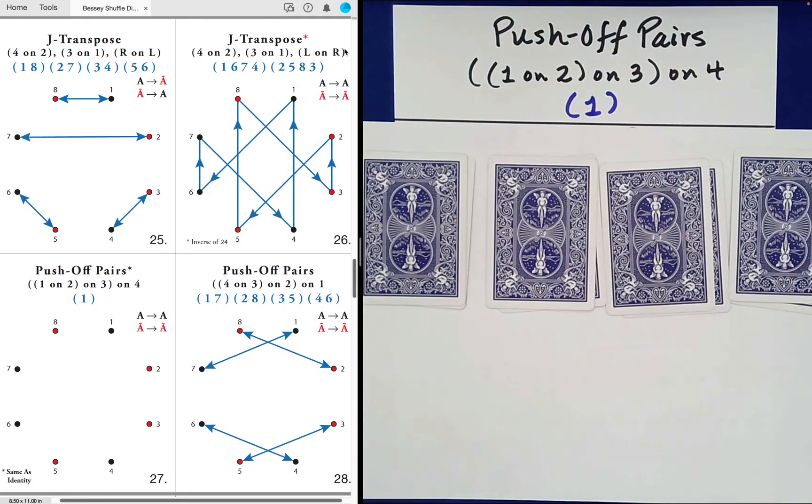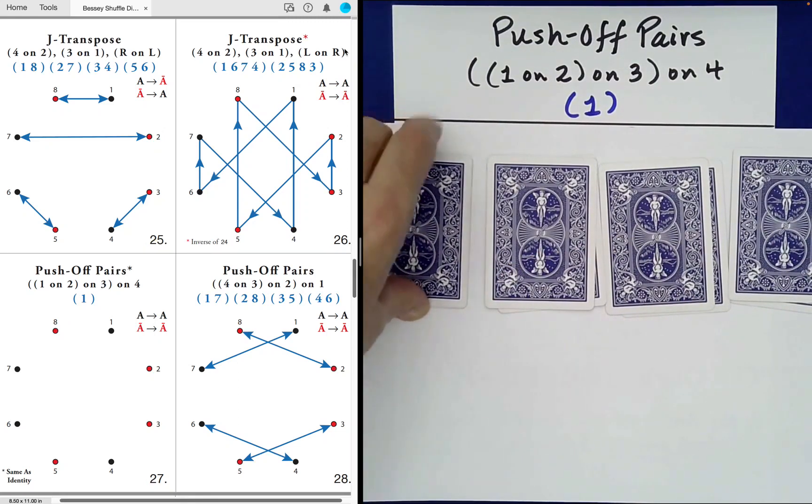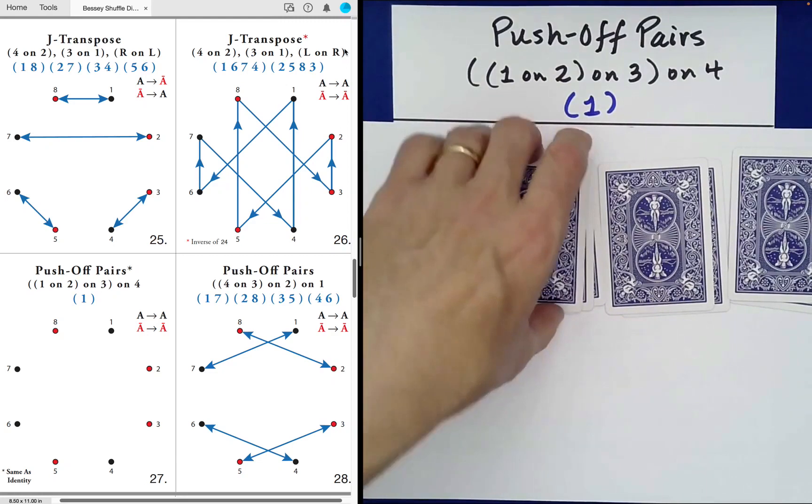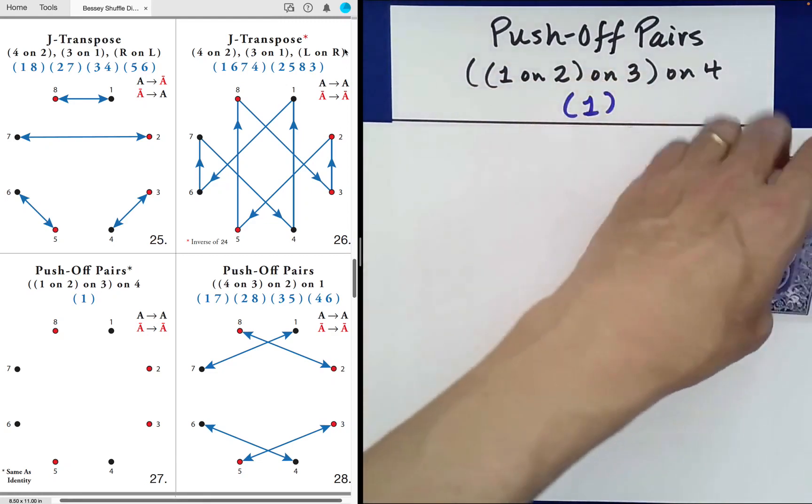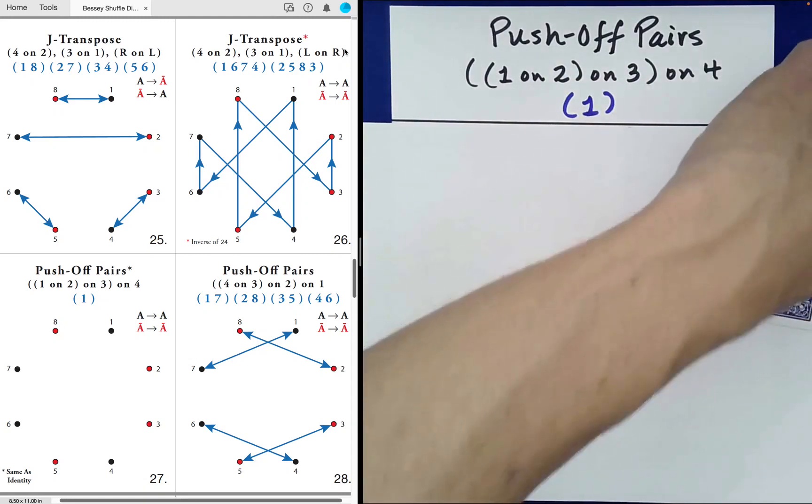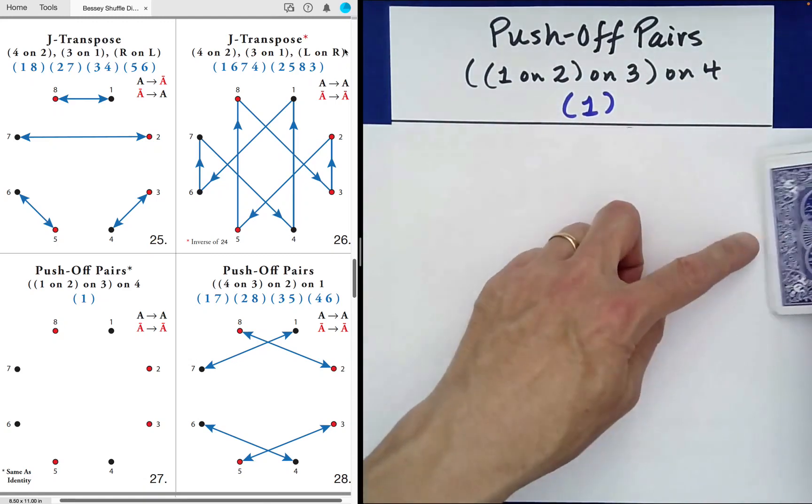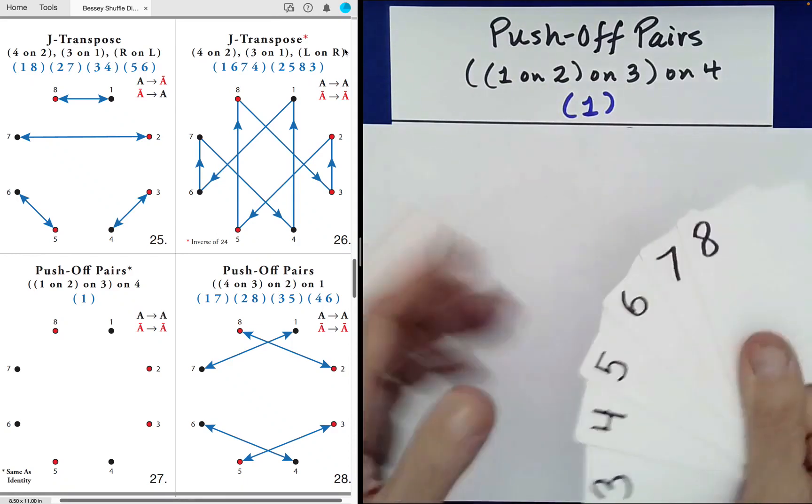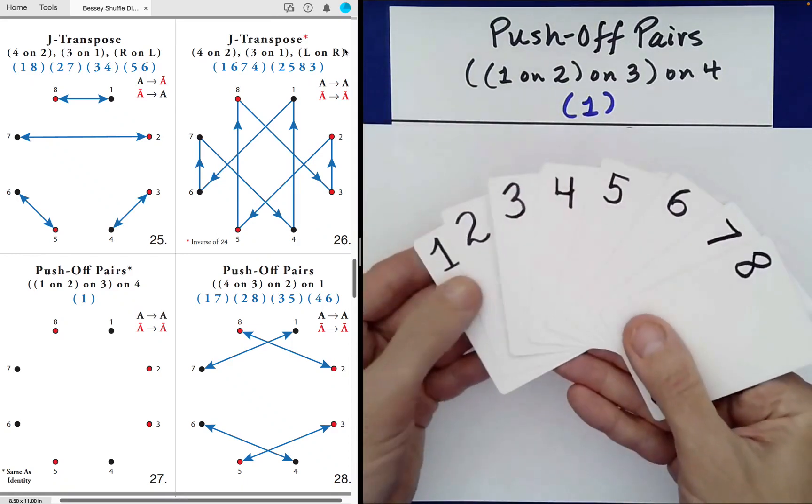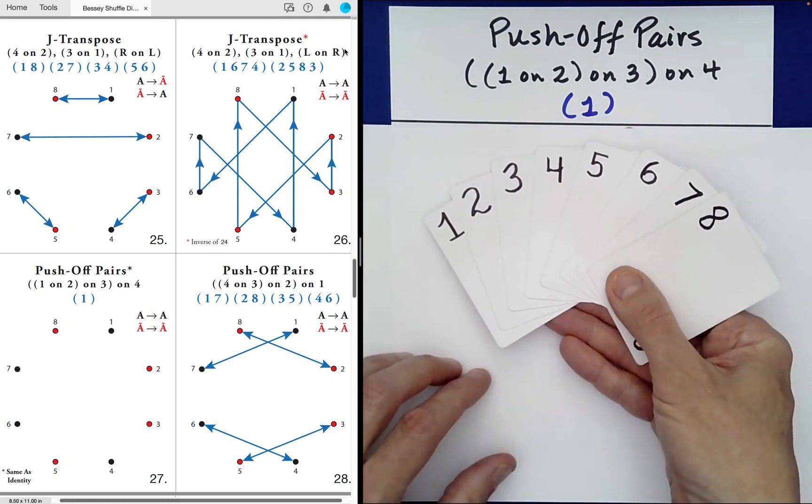Now the stacking is from left to right, so we're going to stack one on top of two, that packet of four on top of three, and those six cards on top of pile four. Now if you really think about what's happening with the cards, you'll probably detect that we should return the packet to its original order, which we do.